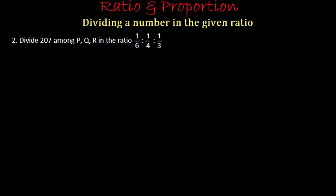Now the second problem: we have to divide 207 in the ratio of 1/6 : 1/4 : 1/3. The first step is to convert this ratio so that each term is an integer. To do that, we multiply all the values in the ratio by the same number — specifically the LCM of 6, 4, and 3 — since multiplying all terms by the same number doesn't change the ratio.